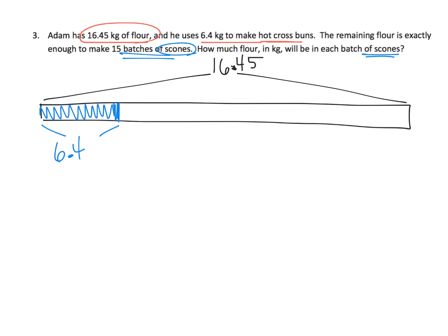So that piece right there is for the hot cross buns. And then it says the remaining flour—now we don't know how much is the remaining flour, but it's going to be used to make 15 batches of scones. So let's see, 15 batches. I'm going to cut it into thirds. Then I'm going to cut each one of those into five pieces. So there's our 15 batches of scones. And the question is, how much is one of those batches?